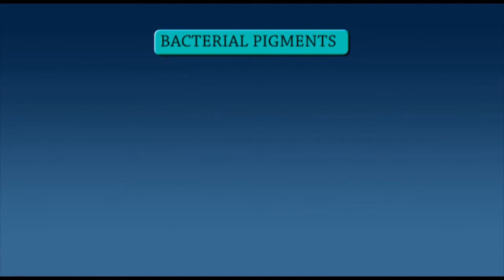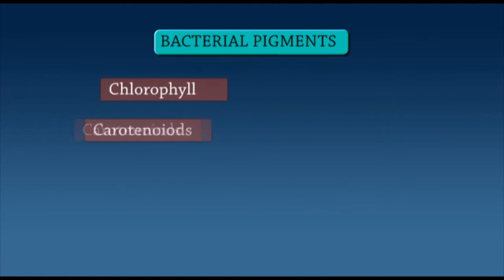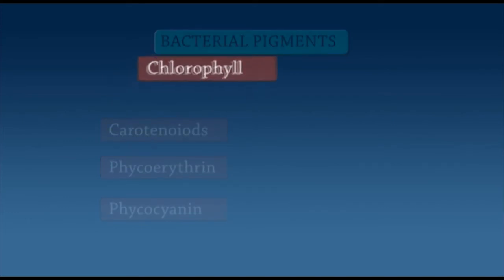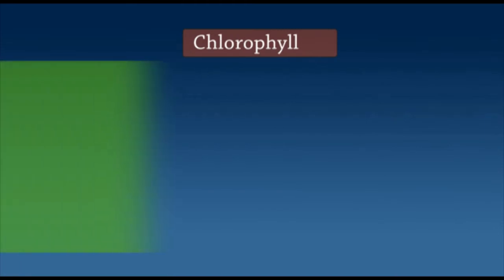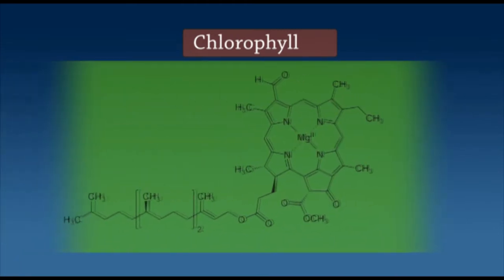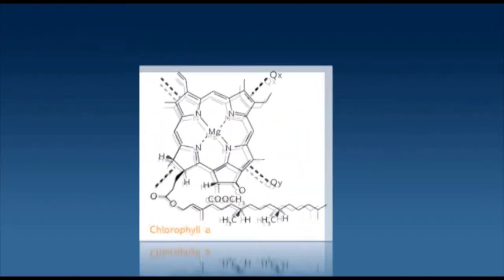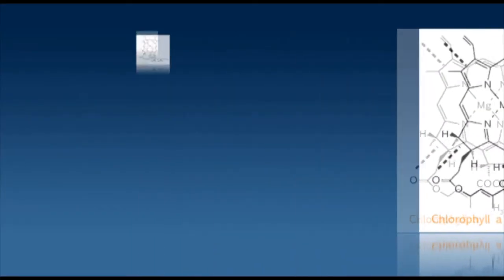Now let's study the bacterial pigments. Photosynthetic pigments include the chlorophylls, carotenoids, phycoerythrin, and phycocyanin. Among these pigments, chlorophyll is the most important. Chlorophylls are large planar rings composed of four substituted pyrrole rings with a magnesium atom coordinated to the four central nitrogen atoms. Although several chlorophylls are found in eukaryotes, the most important are chlorophyll A and chlorophyll B.